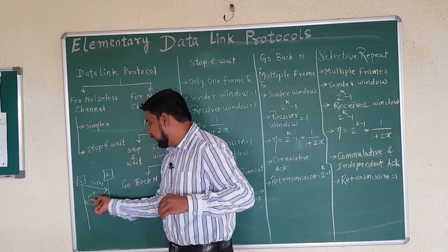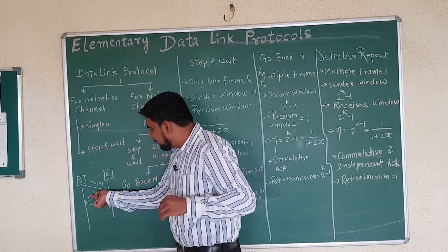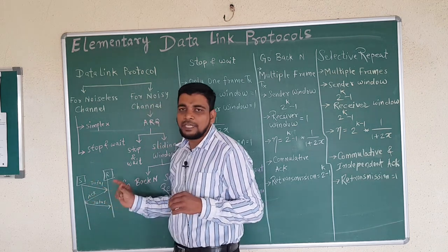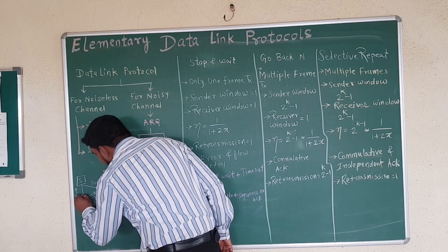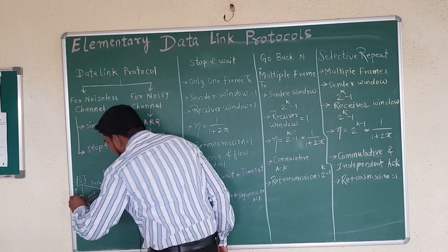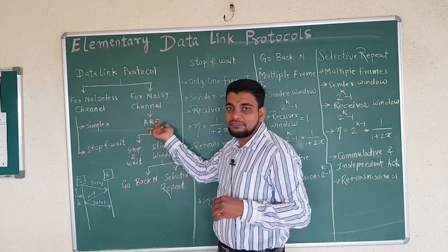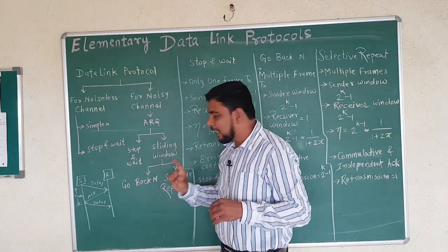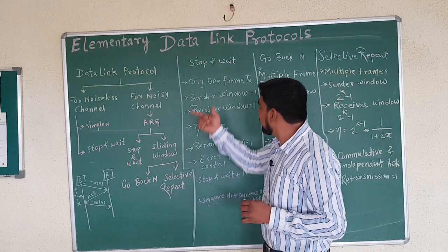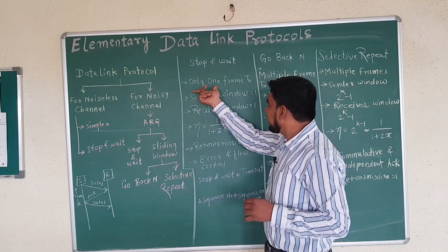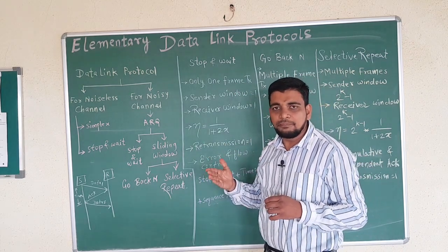When the acknowledgement is received — confirming Data 1 was received — then Data 2 is sent. A time duration is allocated for the acknowledgement and data transmission. If within that time the acknowledgement is not received, the sender will retransmit the information. This is called Automatic Repeat Request. In stop-and-wait, only one frame is transmitted at a time; until its acknowledgement arrives, the second frame is not sent.